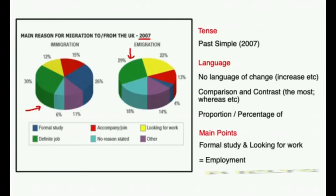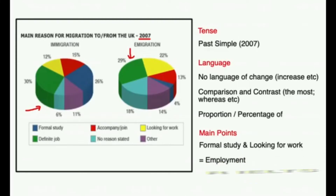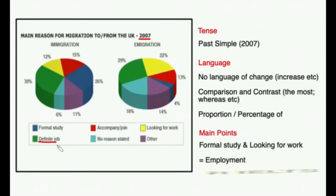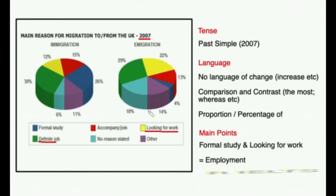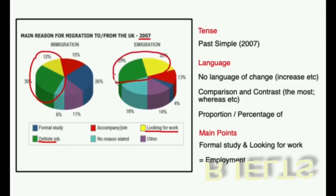Thirdly, what you should do when analysing this type of chart is to identify a key point that stands out from the IELTS pie chart that you can use for an overview. After you have introduced what the pie chart shows, you should have an overview with this key point in. It's sometimes a good idea to look for things that are larger as that's often the most important. In this case, moving for a definite job is the most popular reason in both charts. Also, looking for work is a popular reason as well — if you add these together you can group them as employment, making up the bulk of the pie chart.